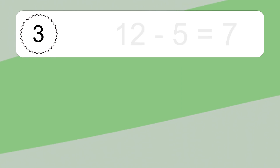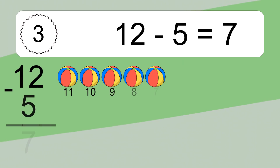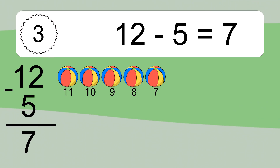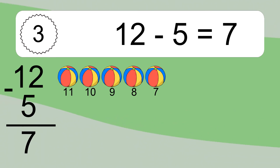12 minus 5 equals what? 12 minus 5 equals 7. Let's count it: 11, 10, 9, 8, 7.